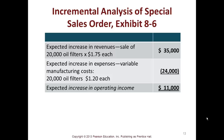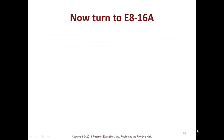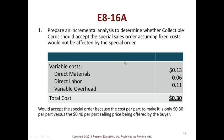Here's an incremental analysis of special orders from Exhibit 8-6: your increase in revenue, expected increase in expenses, and increase in operating income — so it makes sense to take the special order. In E-8-16A, the variable cost per unit for materials, labor, and overhead is 30 cents. The company would accept the special order because the cost per part to make is only 30 cents and they're selling at 40 cents per part.